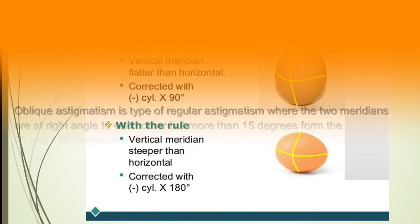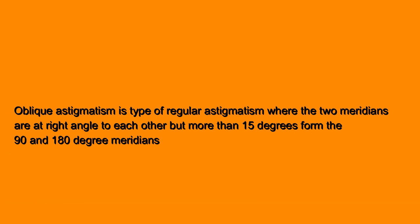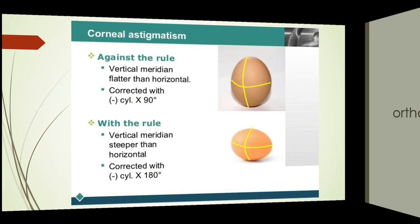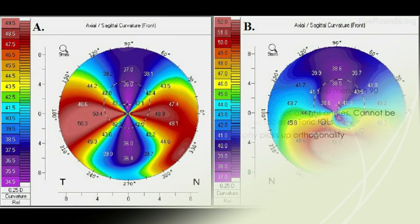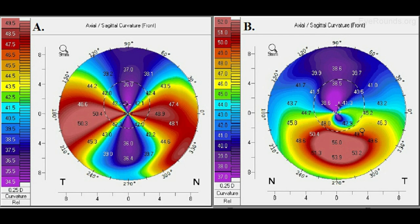Oblique astigmatism occurs when the two meridia are at right angles but more than 15 degrees away from 90 to 180 degrees. The most important reason to differentiate between regular astigmatism — also known as orthogonal — and irregular astigmatism — also known as non-orthogonal — is that non-orthogonal astigmatism cannot be corrected with spectacles, soft contact lenses, or toric intraocular lenses, and can only be corrected with rigid gas permeable contact lenses. Non-orthogonal astigmatism cannot be measured by keratometry and can be detected only by corneal topography.